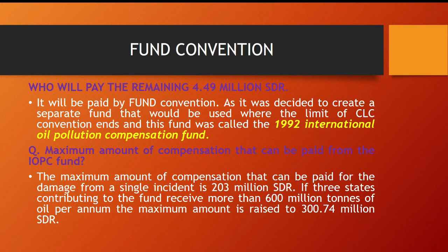Question: What is the maximum amount of compensation that can be paid from the IOPC Fund? The maximum amount of compensation that can be paid for damage from a single incident is 203 million SDR. If three states contributing to the fund receive more than 600 million tons of oil per annum, the maximum amount is raised to 300.74 million SDR.